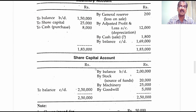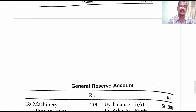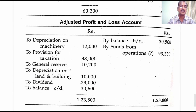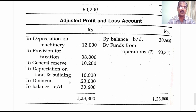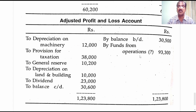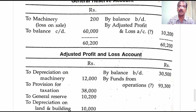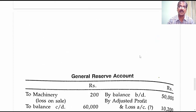Now let's close the adjusted profit and loss account. The depreciation on land and building and dividend proposed are also recorded. Closing the adjusted profit and loss account gives a balancing figure of 93,300 rupees on the credit side, which is nothing but funds from operations. It would be taken over to the sources side of the funds flow statement.